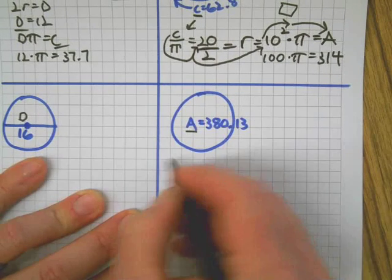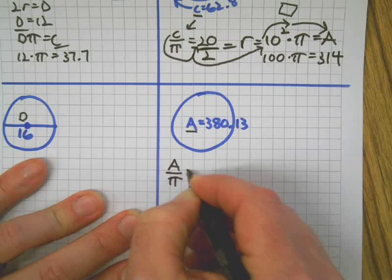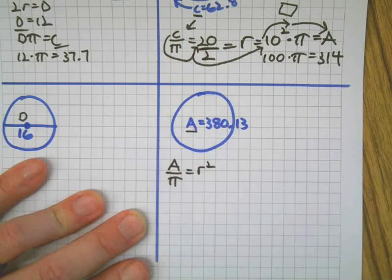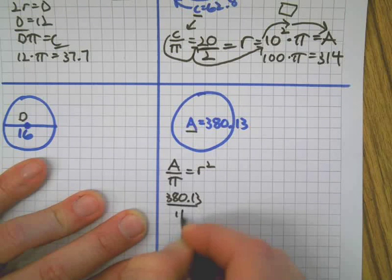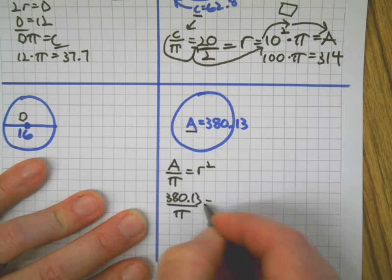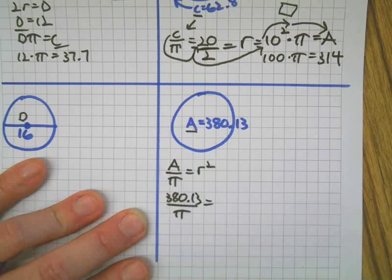So 380 divided by pi. I'm going to say what I'm doing and then I'm going to do it down here, so I'll have all the letters up here, all the numbers down here, just to show all these connections.